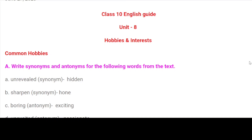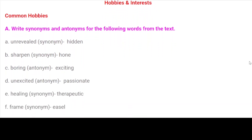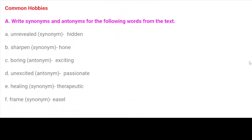Class 10 English Guide, Unit 8: Hobbies and Interests — Common Hobbies. Write synonyms and antonyms for the following words from the text. A. Unrevealed — synonym: hidden. B. Sharpen — synonym: hone.